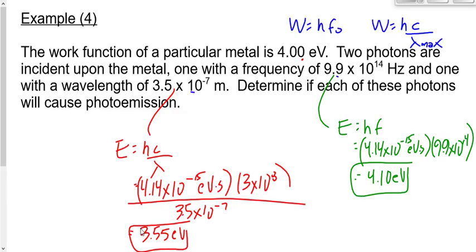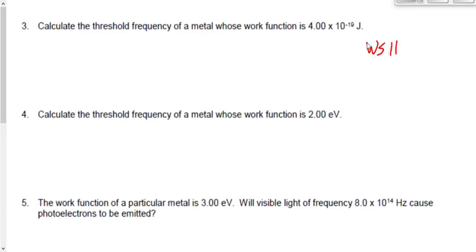For photon 2, the energy is 3.55 eV, which is below the work function of 4.00 eV, so electrons would not be ejected — the answer is no. Now take a look at worksheet number 20, specifically questions 3 to 7. Remember: joules versus electron volts — when you can use electron volts, when you have to use joules, be consistent. And remember, if you're not sure within about 5–10 seconds which equation to use, pick the red one.